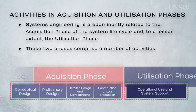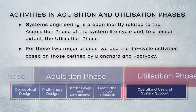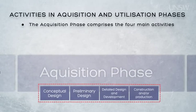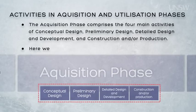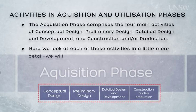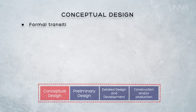In the acquisition phase, the activities are called conceptual design, preliminary design, detailed design and development, and construction and production. In the utilization phase, the activities are operational use and system support, and these two activities are undertaken in parallel. It's the acquisition phase that we'll focus on throughout the course, and we'll look at each of those activities in more detail in the coming weeks.